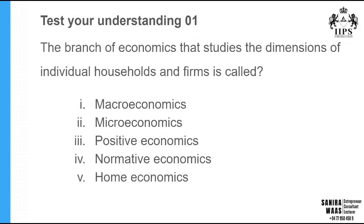Here is a question to test your understanding: 'The branch of economics that studies the dimensions of individual households and firms is called...' The answer options are macroeconomics, microeconomics, positive economics, normative economics, and home economics. You may not know positive, normative, or home economics yet, but you now have a good idea about macroeconomics and microeconomics.